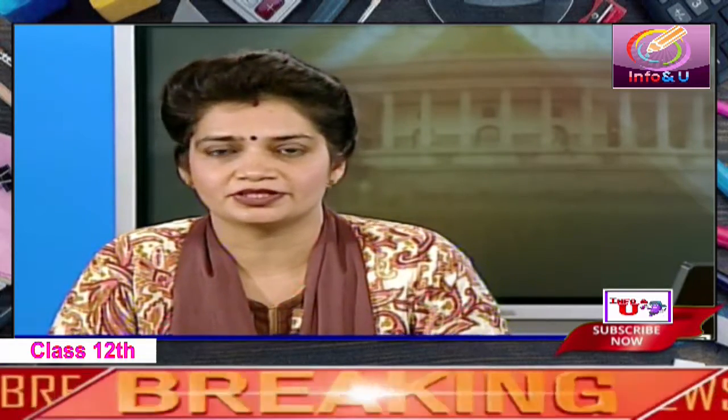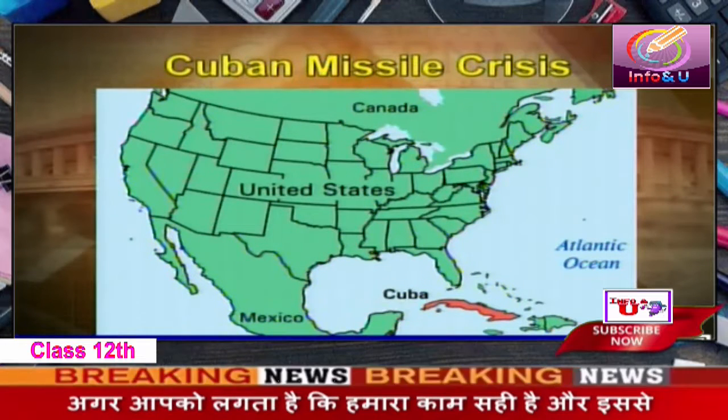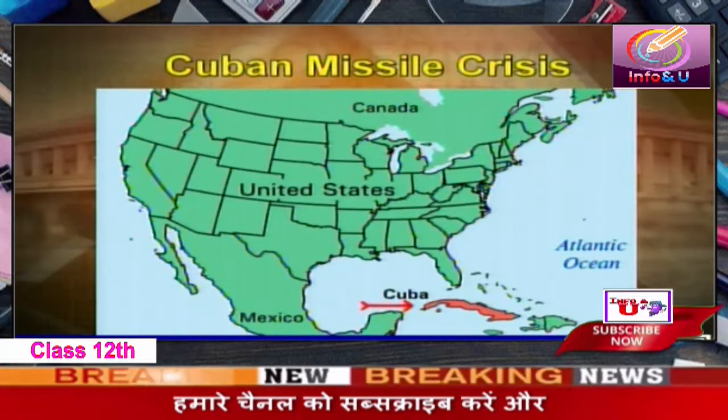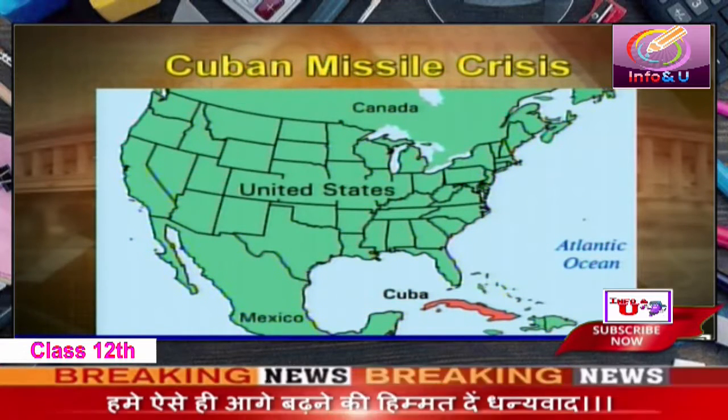Soviet Premier Nikita Khrushchev decided to make Cuba a Russian military base in 1962. He decided to place nuclear missiles in Cuba. The US came to know about the placement of these nuclear weapons three weeks after installation. This put the US for the first time in a danger zone — within close and near range of USSR missiles. As you can see on the map, Cuba was quite close to US territory, with Florida particularly near to Cuba.